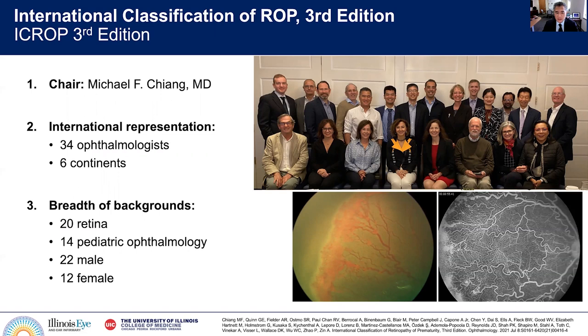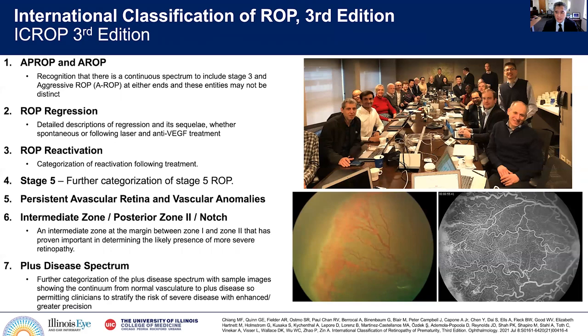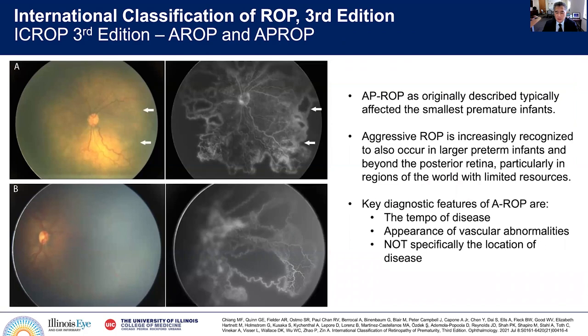Around 2019, the group came together, chaired by Dr. Michael Chang, who is now director of the National Eye Institute. There was excellent international representation: 34 ophthalmologists from six continents — 20 retina and 14 pediatric ophthalmology specialists, 22 male and 12 female. The main topics discussed included APROP and AROP, ROP regression and reactivation, stage 5 disease, persistent avascular retina and vascular anomalies, posterior zone 2 and the notch, and plus disease.